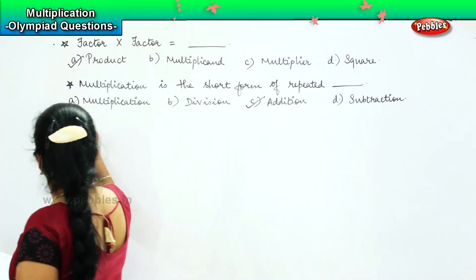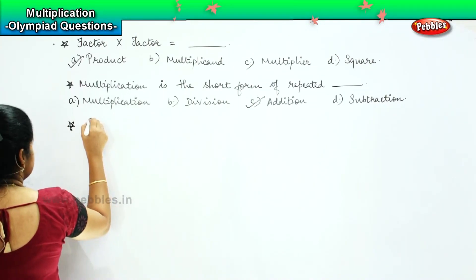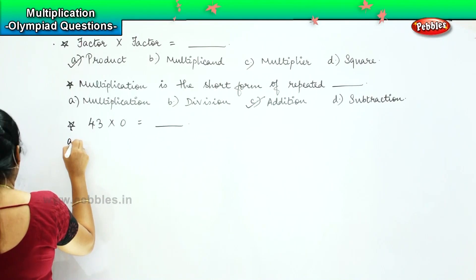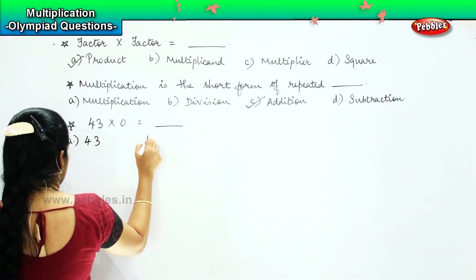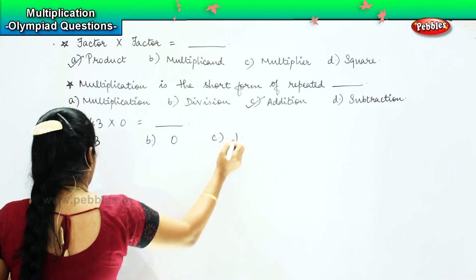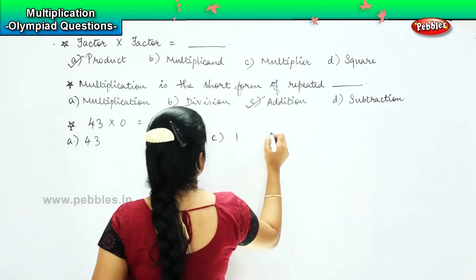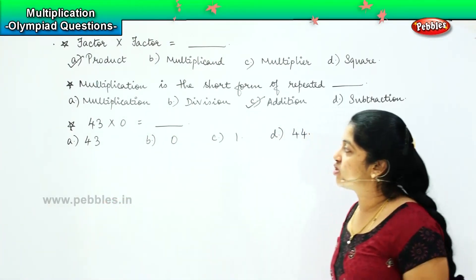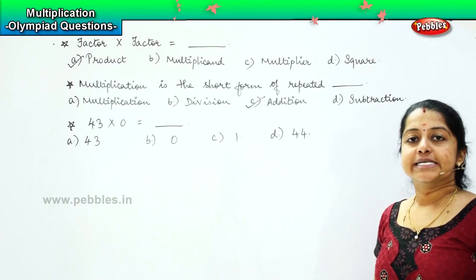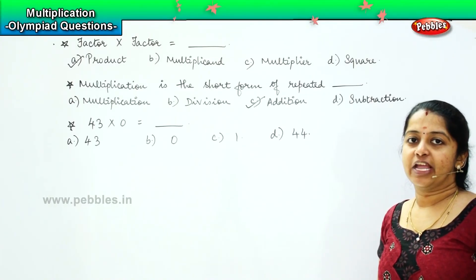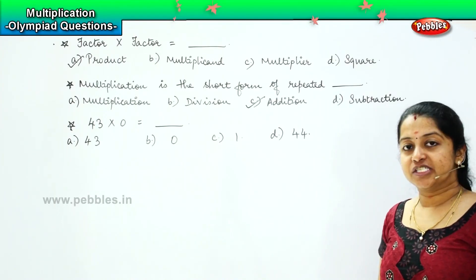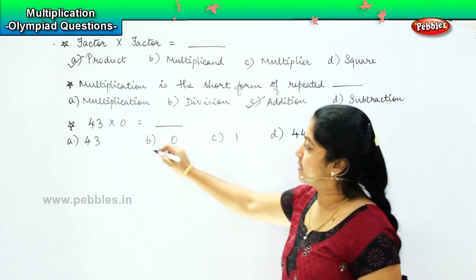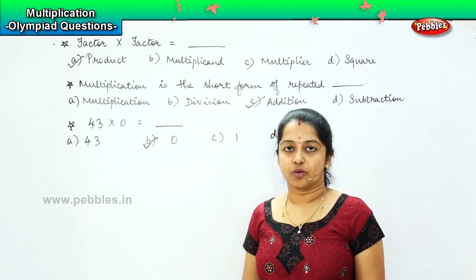Here is your next question: 43 into 0 is equal to dash. Your options are: A) 43, B) 0, C) 1, and D) 44. This talks about the zero property of multiplication, where anything multiplied by 0 will be 0. So option B is the right answer.